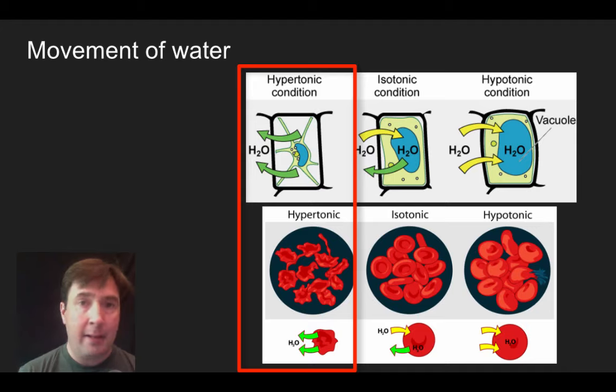This is referred to as plasmalized in a plant cell. In an animal cell, because there's no cell wall, we just see a shriveling up the cell in that hypertonic environment.